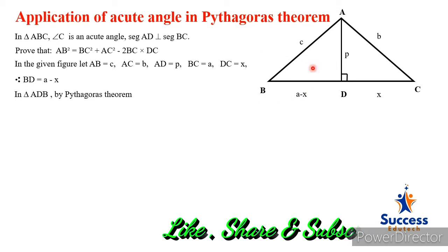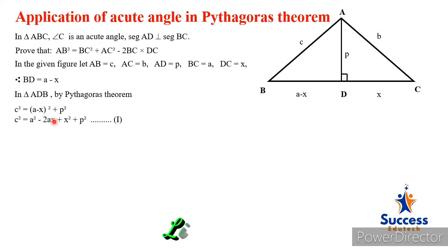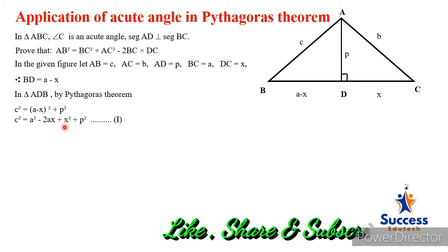Now let's see how to prove this. Apply Pythagoras theorem to the right-angle triangle ADB. We get: c² = AD² + BD², which gives c² = (a − x)² + p². Expanding the bracket: c² = a² − 2ax + x² + p². This is equation one.